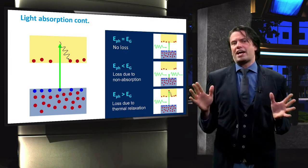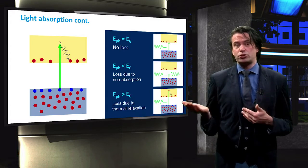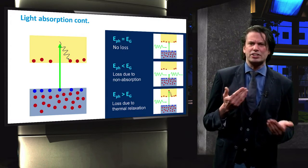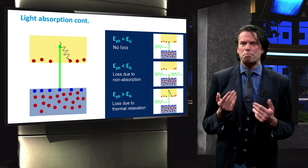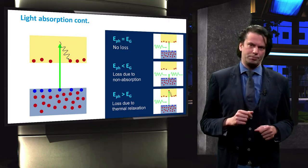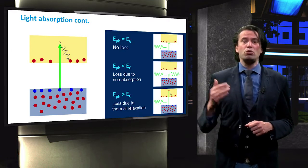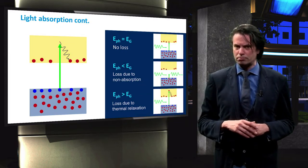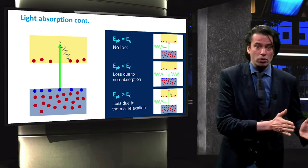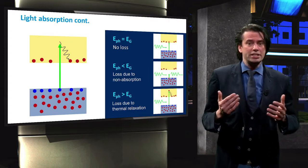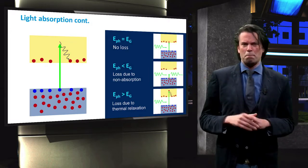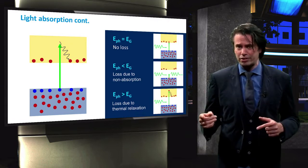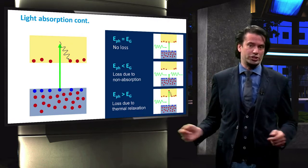From these two effects, non-absorption and thermalization, we can see that there is a trade-off when selecting the band gap of a solar cell. If the band gap is too large, much of the solar spectrum will pass through the solar cell due to non-absorption. If the band gap is too small, the solar cell will indeed absorb a lot of light. Much of the energy of that light, however, will be lost due to thermalization.